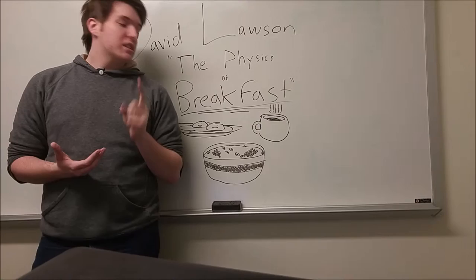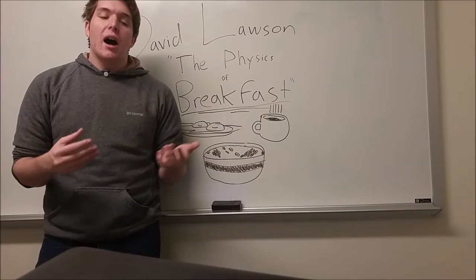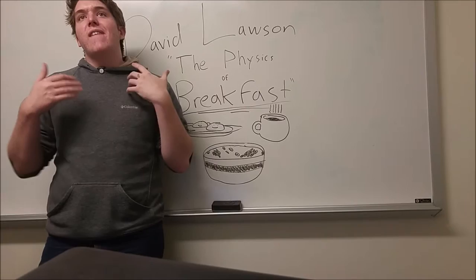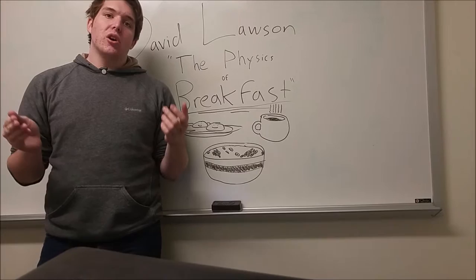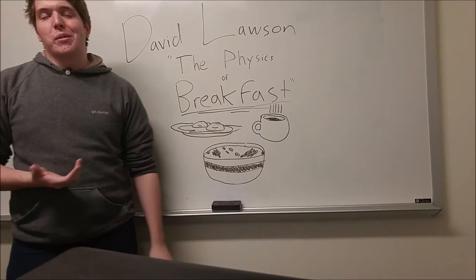French-style scrambled eggs are the really interesting one. They're made in a double boiler — a pot over a pot of boiling water. The boiling water heats the bottom of the bowl, and you continuously whisk the eggs as they slowly cook. Because of this, the eggs never really reach higher than 100 degrees Celsius. The curds that form are very small, so the result is very creamy eggs that are also very moist.